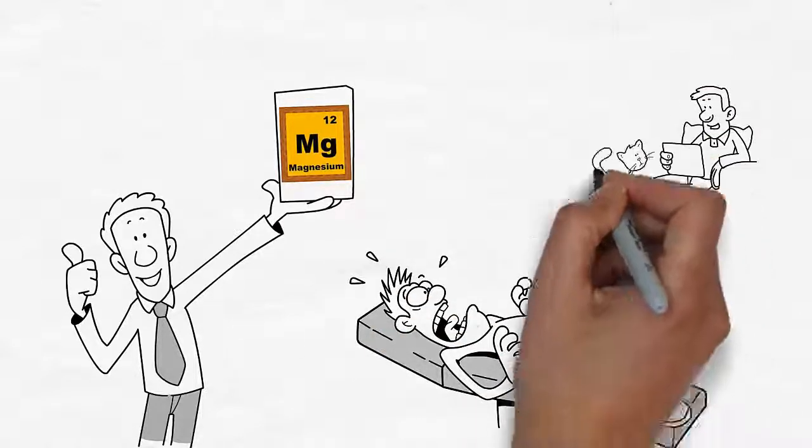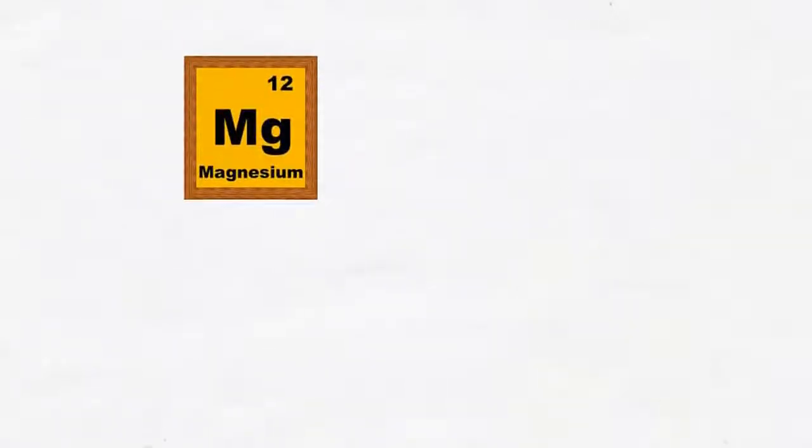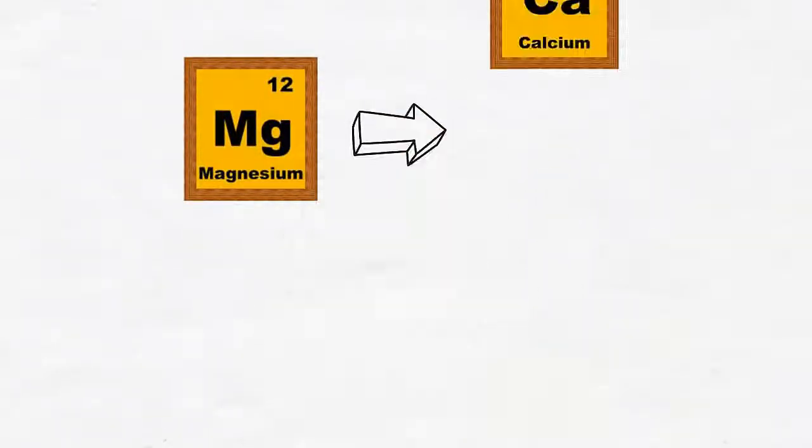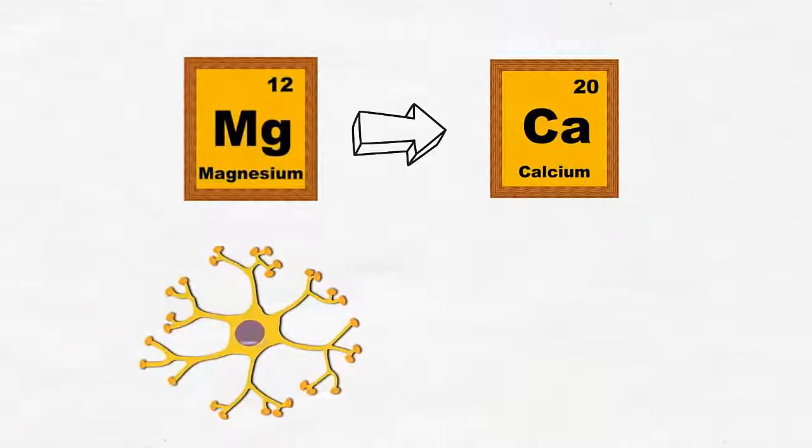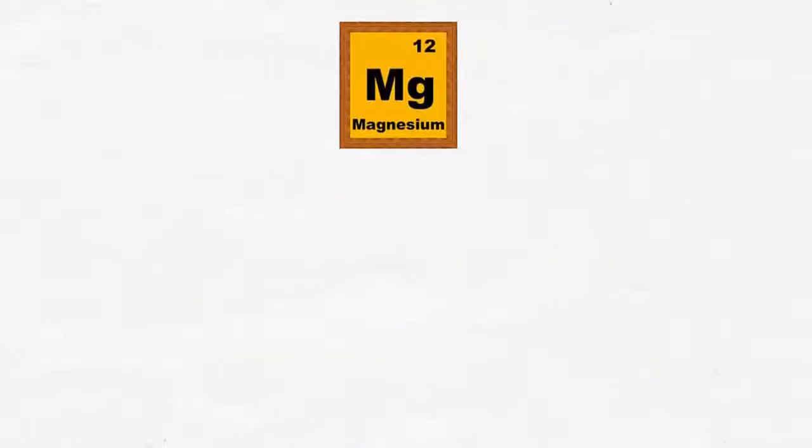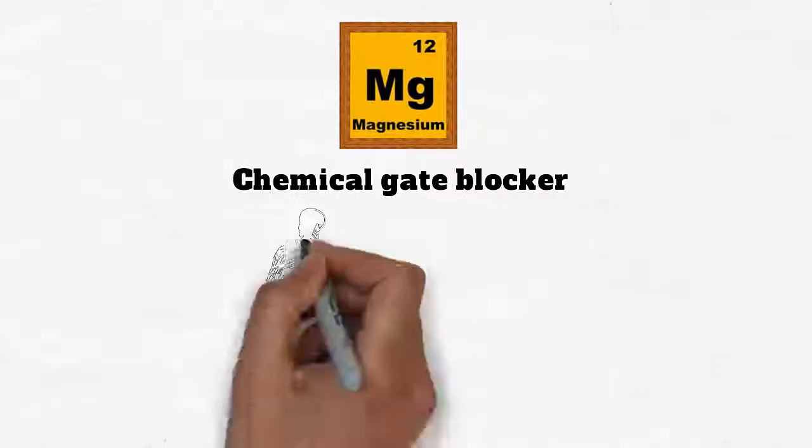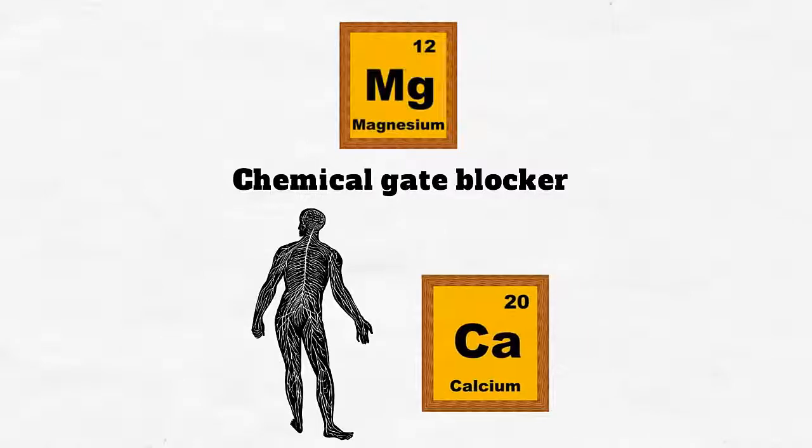More specifically, magnesium interacts with calcium to help regulate the nerves and muscles. Magnesium serves as a chemical gate blocker in nerve cells, relaxing the nerves by preventing calcium from rushing into the nerve cells to activate them.